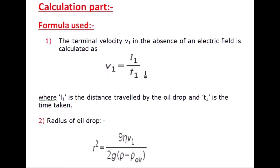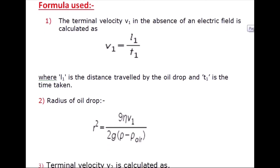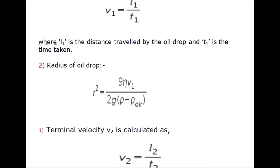The formula for terminal velocity v1 is: length divided by time. We will calculate this from our simulation part, as already discussed in the previous video. We are calculating the terminal velocity in the absence of an electric field — that is, when the oil drops move downward due to absence of the electric field. Here l1 is for the distance traveled by the oil drop and t1 is for the time taken.